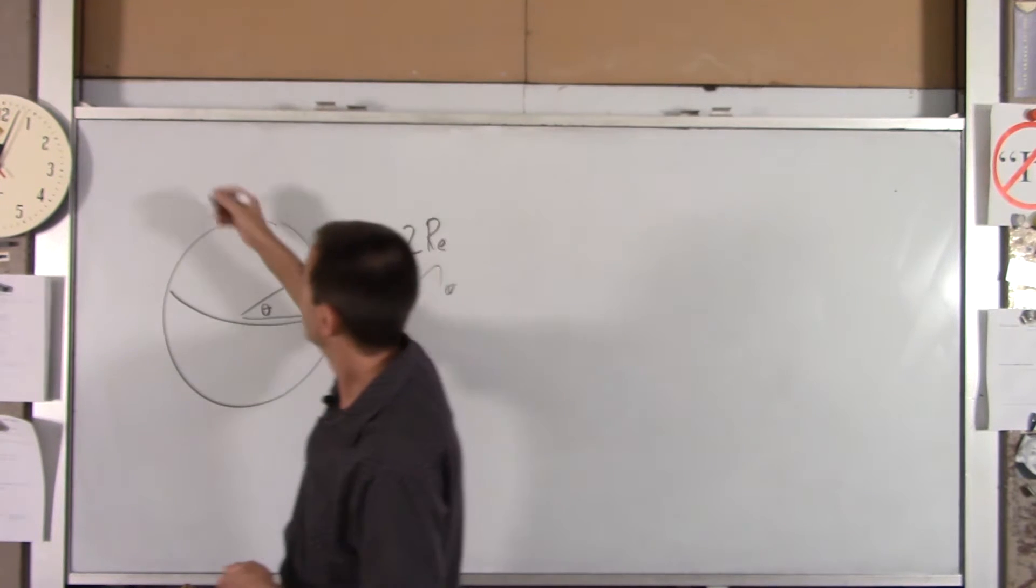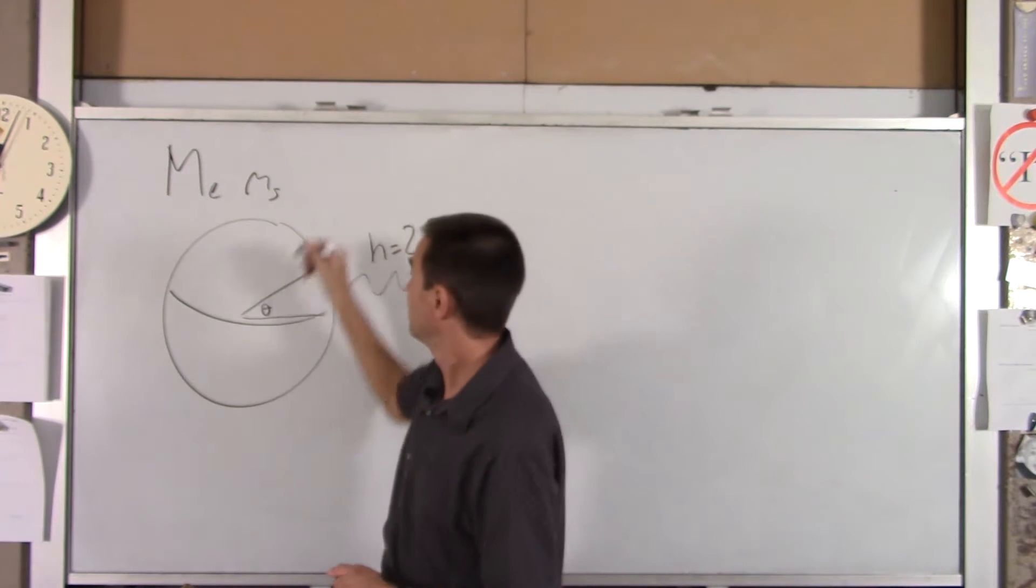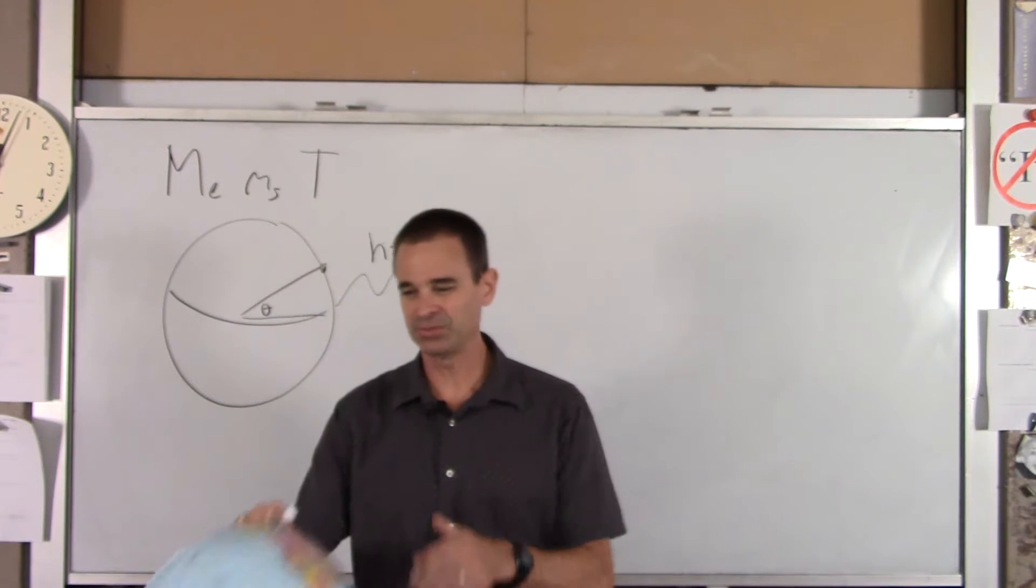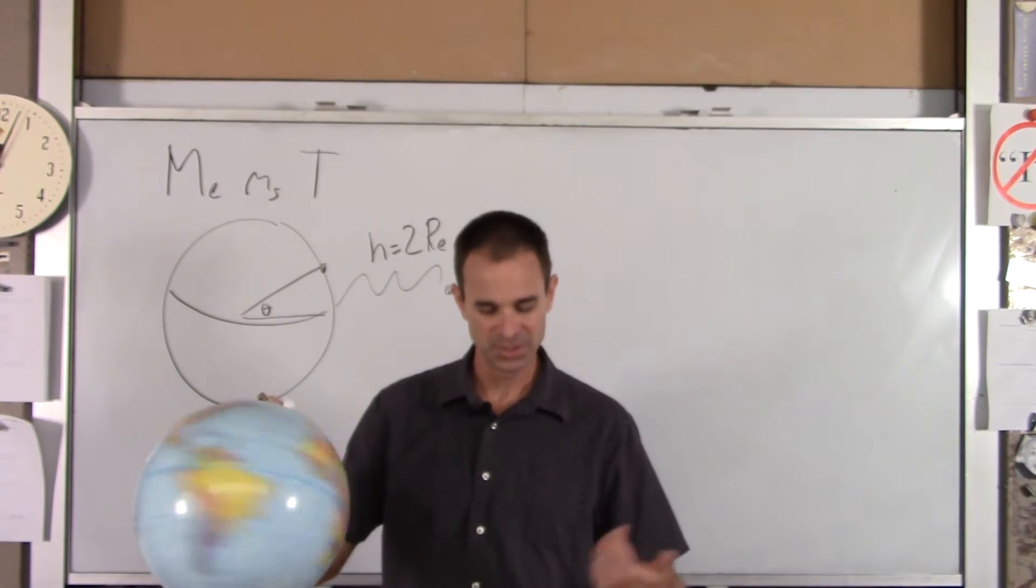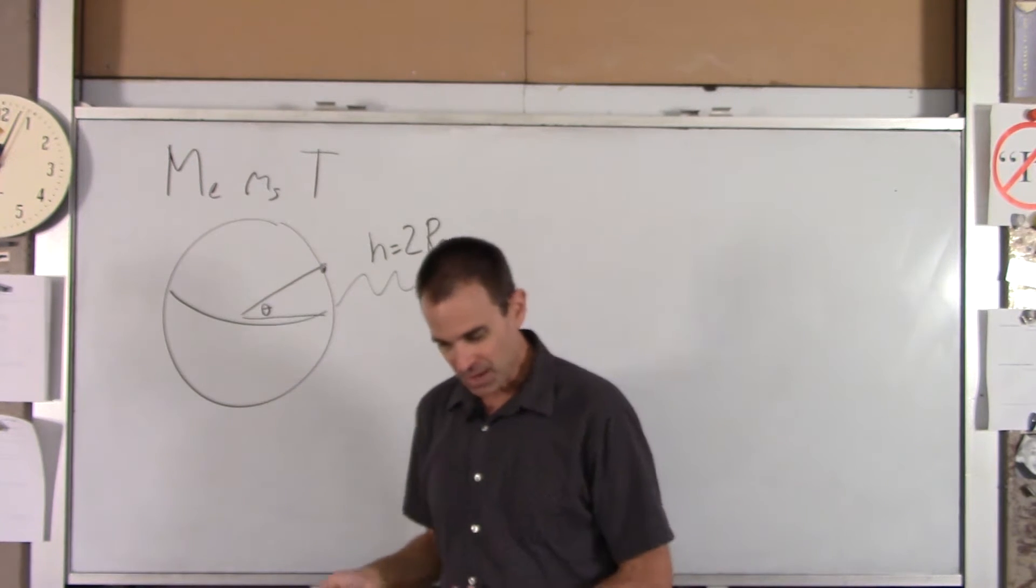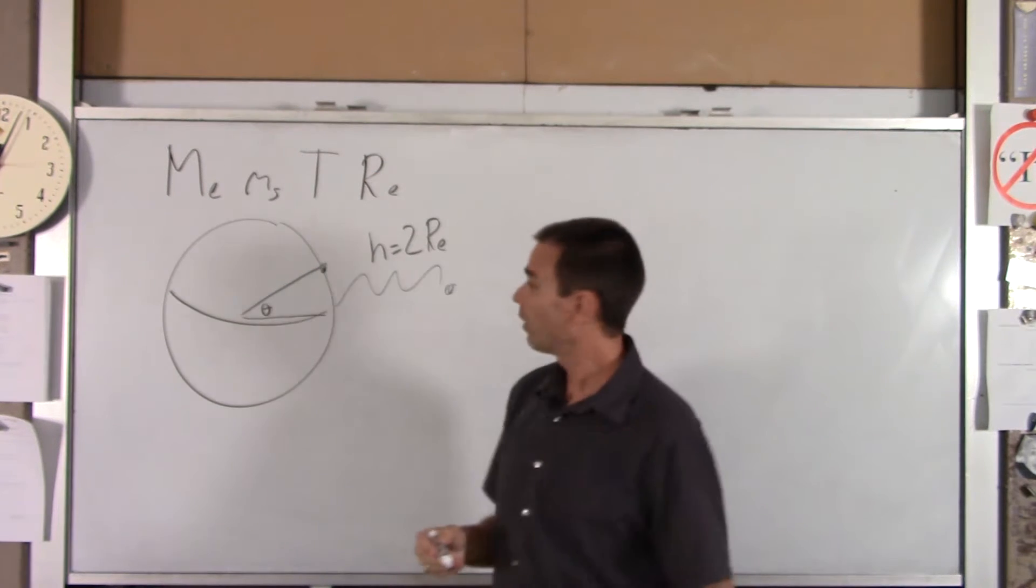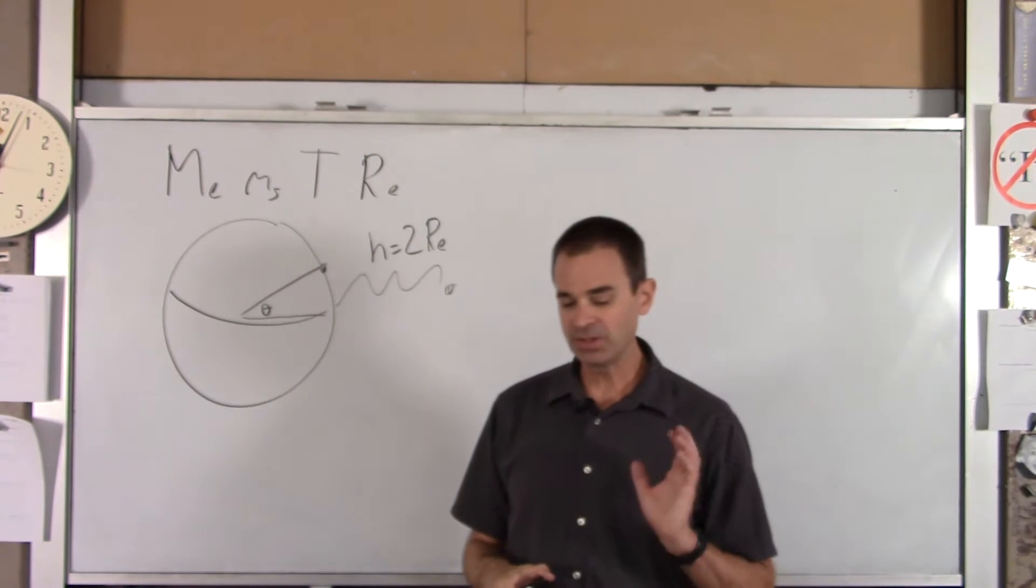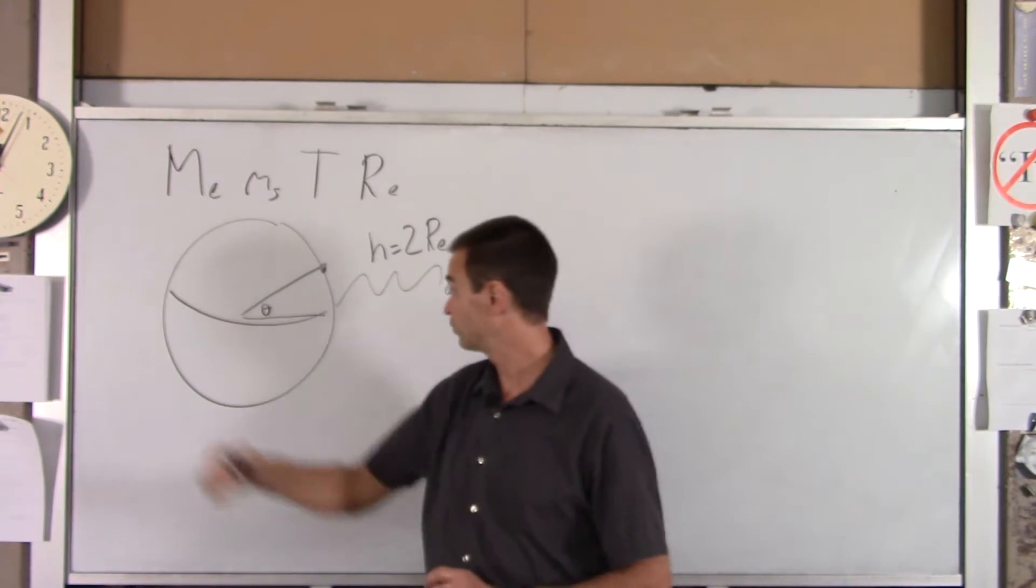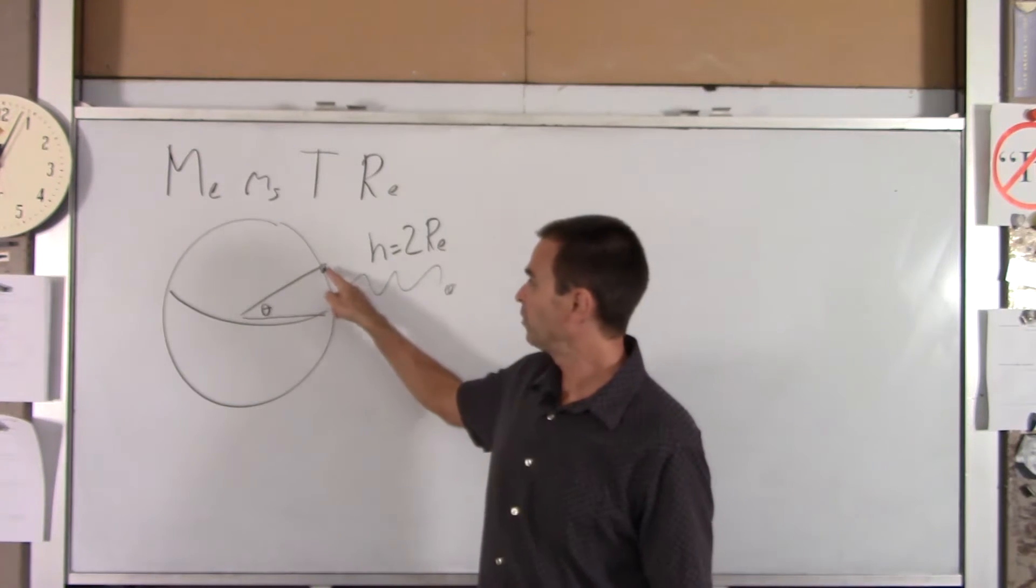So in terms of the following, the mass of the Earth, the mass of the ship, the period of the Earth. By the way, what is the period of the Earth? How long does it take the Earth to spin once around its axis? One day, which is a certain number of seconds. So in terms of those things and the radius of the Earth, I want to determine what's the minimum amount of energy needed to get the spacecraft from here into a circular orbit around the Earth.